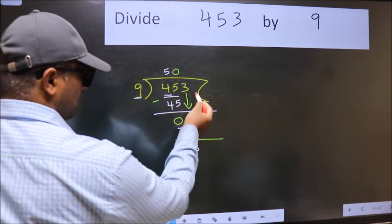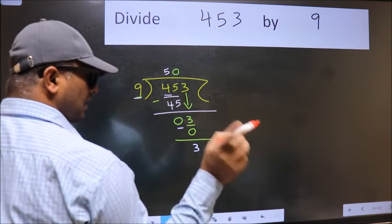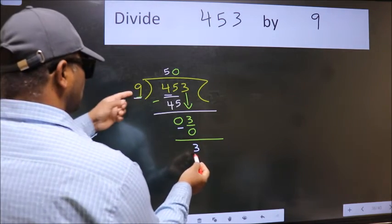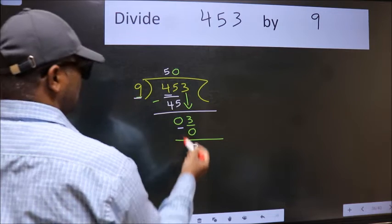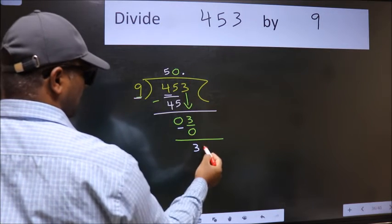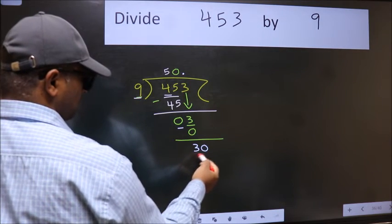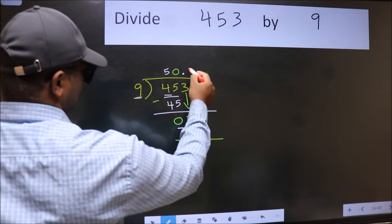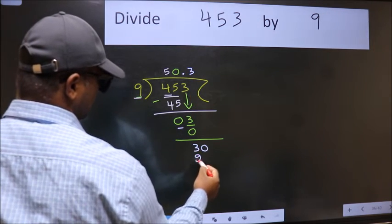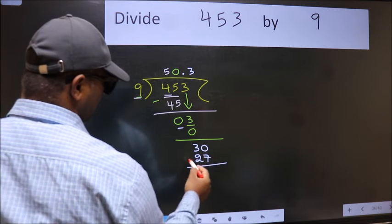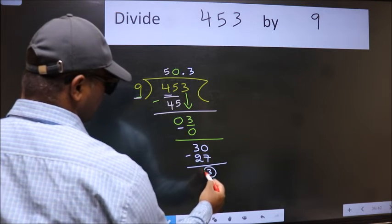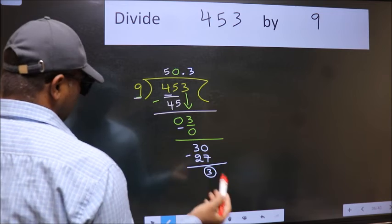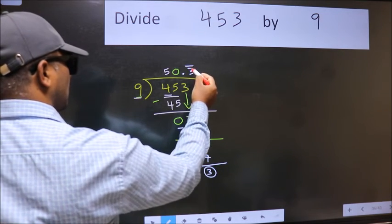Over here, we did not bring any number down, and 3 is smaller than 9, so now we can put a dot and take 0. So 30. A number close to 30 in the 9 table is 9 threes 27. Now we subtract and get 3 again, which means we get a bar on this number.